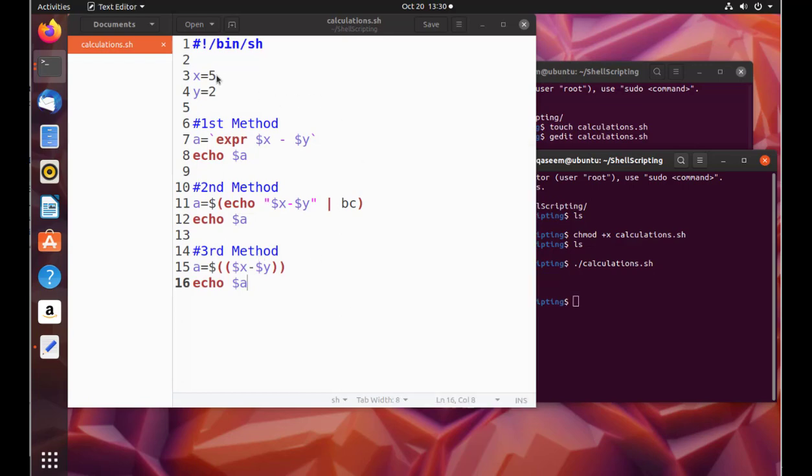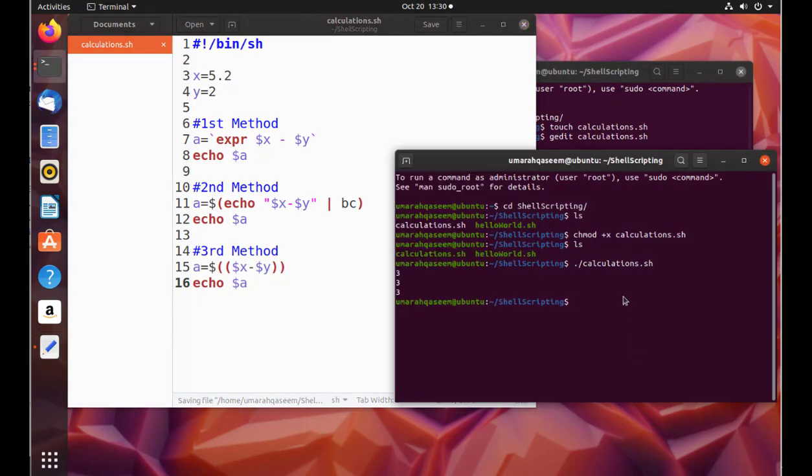Now let's change the values and make them floating-point values. So now x is 5.2 and y is 2. The answer should now be 5.2 minus 2 should be 3.2. So now let's save it and run it and see what happens.